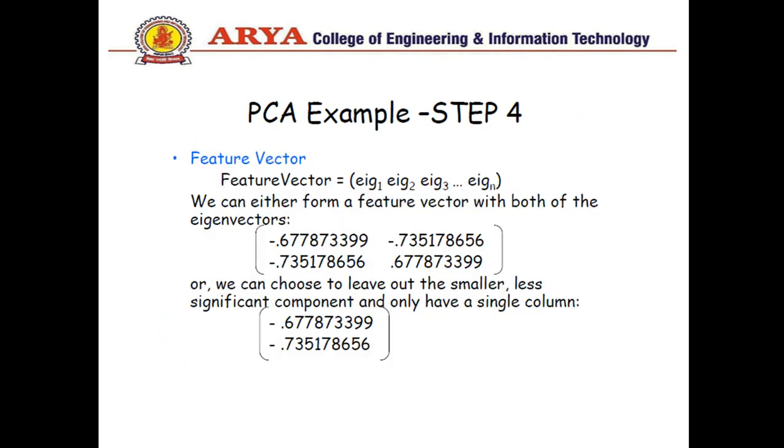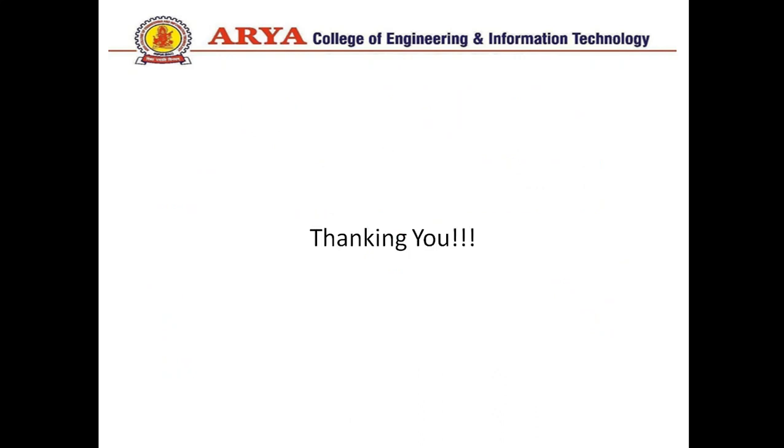What will be the principal components? As I have told, the highest eigenvalue resultant eigenvector is considered as principal component of the data set. In this case we have lambda 2 is greater than lambda 1. So the corresponding eigenvector using lambda 2 will be your principal component. Thank you.